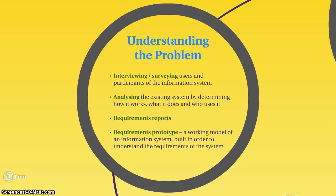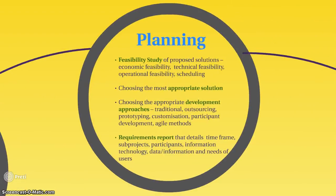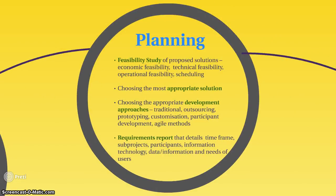Once we fully understand the existing system and what issues exist, we start planning the new solution. This involves a feasibility study, which is comprised of four main parts: economic feasibility — the financials of the new system, do we have enough money; and technical feasibility — the technology, hardware, and software that will be used by the new system.